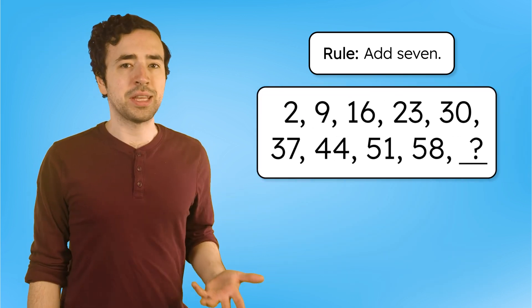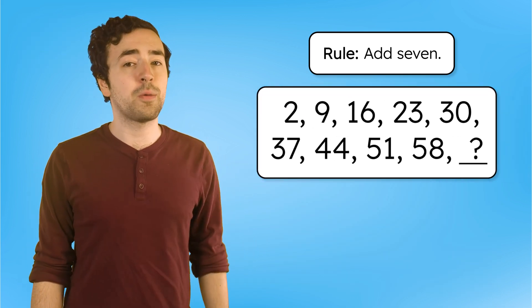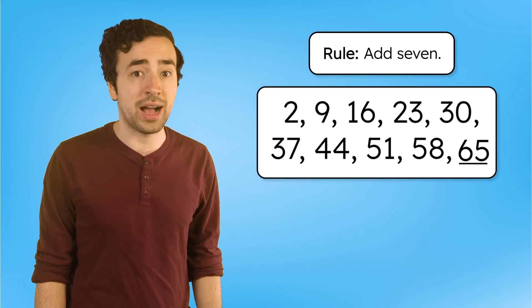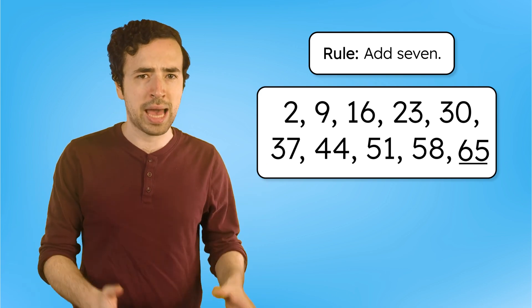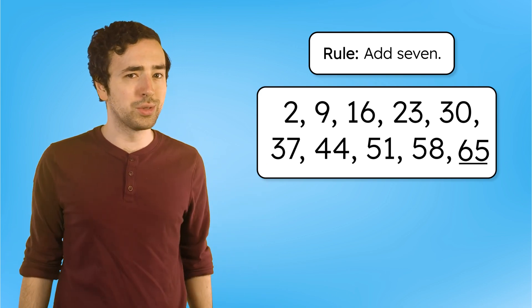When we add seven each time, the tenth term in the pattern is 65. That steady increase is what makes this a growing pattern. Nice job using the rule to look ahead.